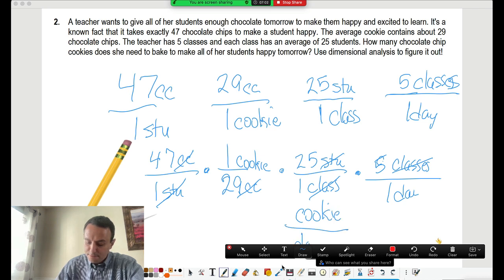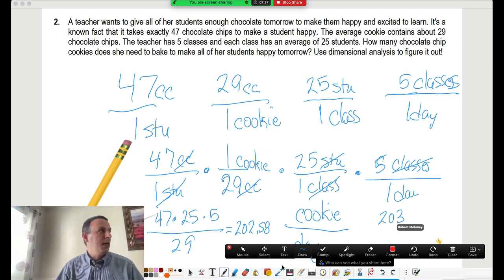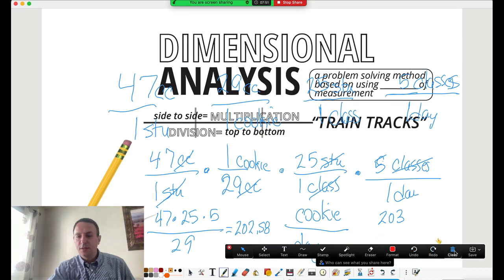And that lets me cancel out students. And then, finally, we're going to finish out how many classes I have in a day. So I have classes, so this teacher has five classes over one day. And that lets me cancel everything out that I'm left with cookies per day. And that's exactly what I want. So really what it breaks down to is 47 times 25 times 5 divided by 29. So 47 times 25 times 5 divided by 29. So this teacher says the answer is 202.58. Now, I can't make 5 eighths of a cookie. So I'm going to have to plan that I really need 203 cookies per day.